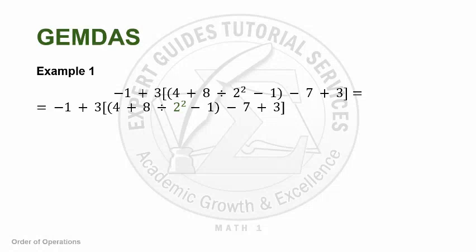The first thing that you have to look at is the grouping symbols. In this case, we have two sets of grouping symbols - one in parentheses and one in brackets. Since the parentheses are inside the brackets, we focus on what's inside the parentheses first. So 4 plus 8 divided by 2 squared minus 1 is what we focus on first.